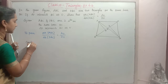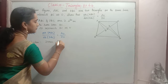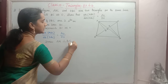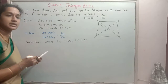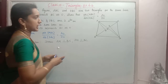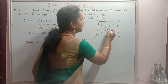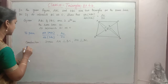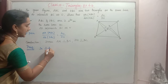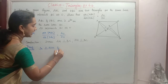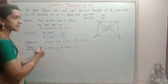Construction: Draw AM perpendicular to BC and DN perpendicular to BC. Now we will take these two triangles — triangle AOM and triangle DON — for the proof.